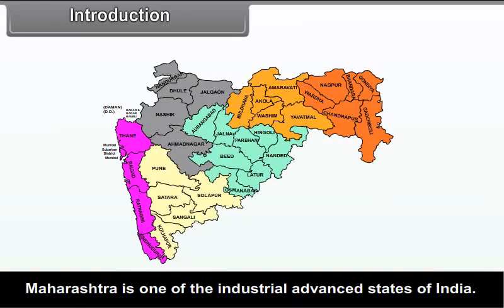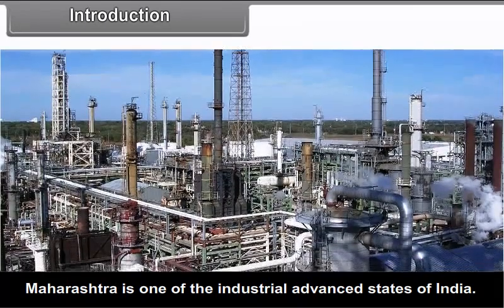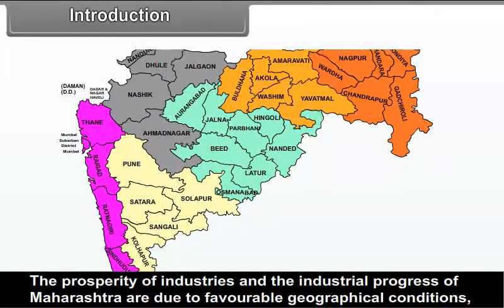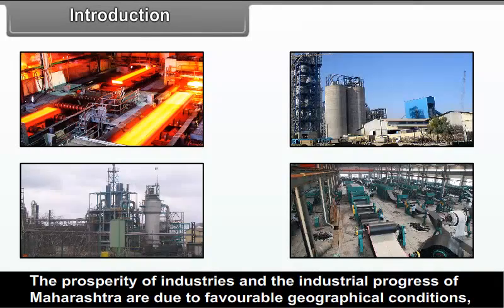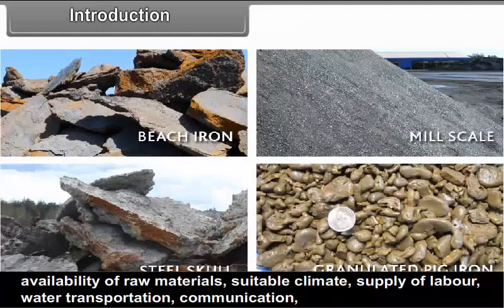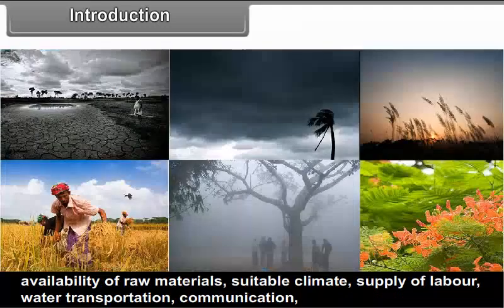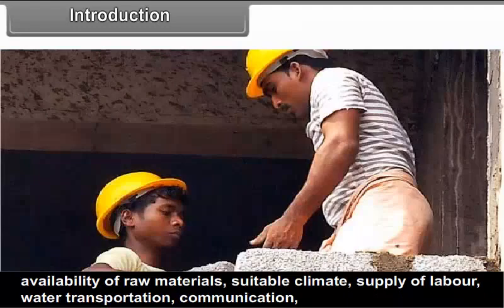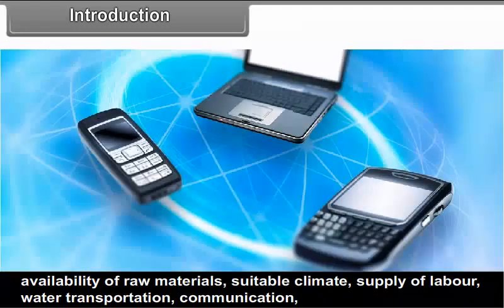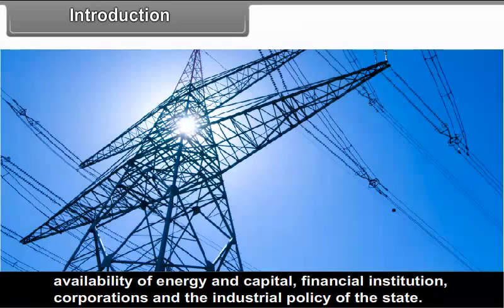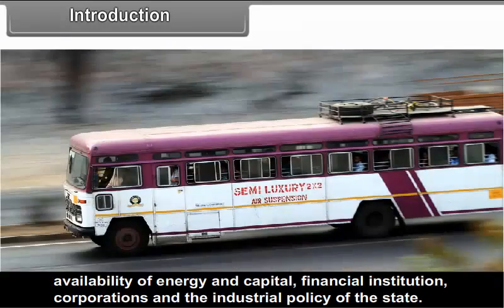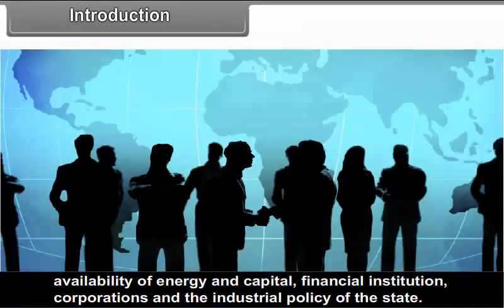Maharashtra is one of the industrially advanced states of India. The prosperity of industries and the industrial progress of Maharashtra are due to favourable geographical conditions, availability of raw materials, suitable climate, supply of labour, water, transportation, communication, availability of energy and capital, financial institutions, corporations and the industrial policy of the state.